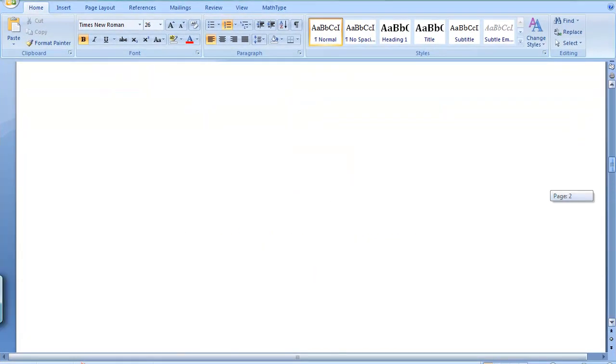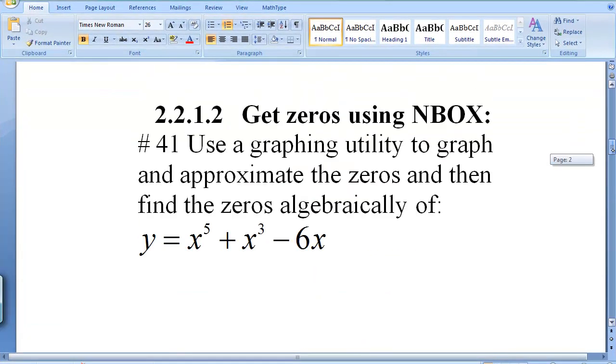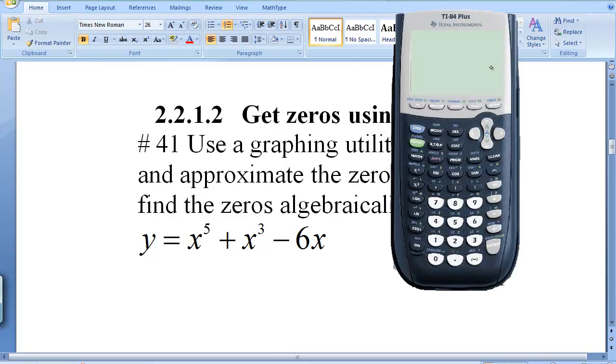So if we wanted to find zeros of this function here using your NBOX, what you'd do is put it in Y1. So we get x to the 5 plus x cubed minus 6x and you'd graph that.